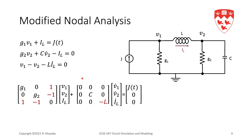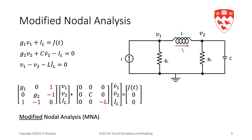The inductor stamp appears in both the G matrix and the C matrix. In this case, we no longer have just nodal equations — we have KCL equations but also the model equations. Our variables are not just nodal voltages; we also have the inductor currents. This is where 'modified' comes from: modified nodal analysis uses this formulation to deal with inductors and, as we will see later, voltage sources.